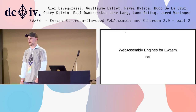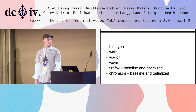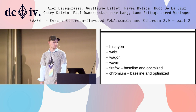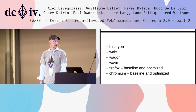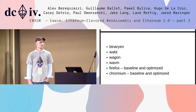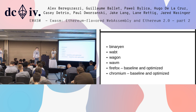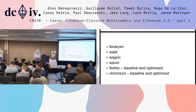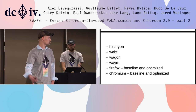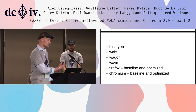My name is Paul. I'm going to talk about WebAssembly engines for eWASM. There are six of them — the first three or four we have working in some capacity. There's a big push to use the Firefox and Chromium WebAssembly engines. They have various tiers of engines: baseline engines which are single-pass linear-pass compilers to machine code, and then there are the optimized versions.